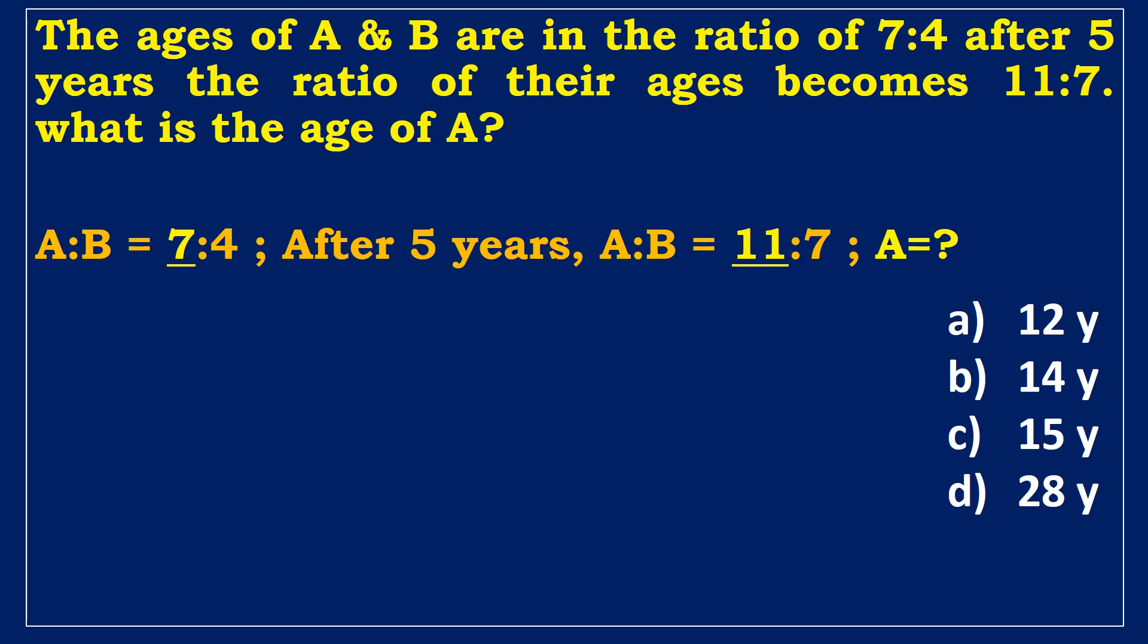Option C, which is 15, is not a multiple of 7. So option C is also ruled out. Option D, which is 28, is a multiple of 7. After 5 years, the age will be 33 years, which is a multiple of 11. Since option D satisfies both conditions, it is a correct answer.